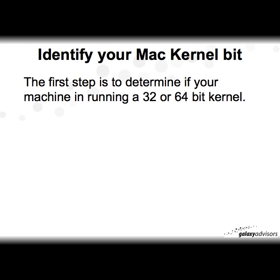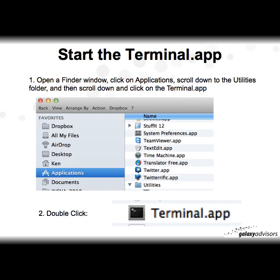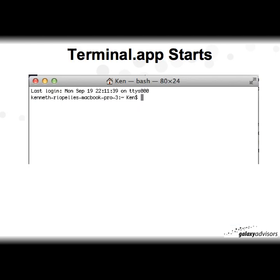The first step is to determine if your machine is running a 32 or 64-bit kernel. You do that by starting the Terminal app. To find it, open the Finder window, click on Applications, scroll down to the Utilities folder, expand it, then scroll down and click on the Terminal app as shown here.